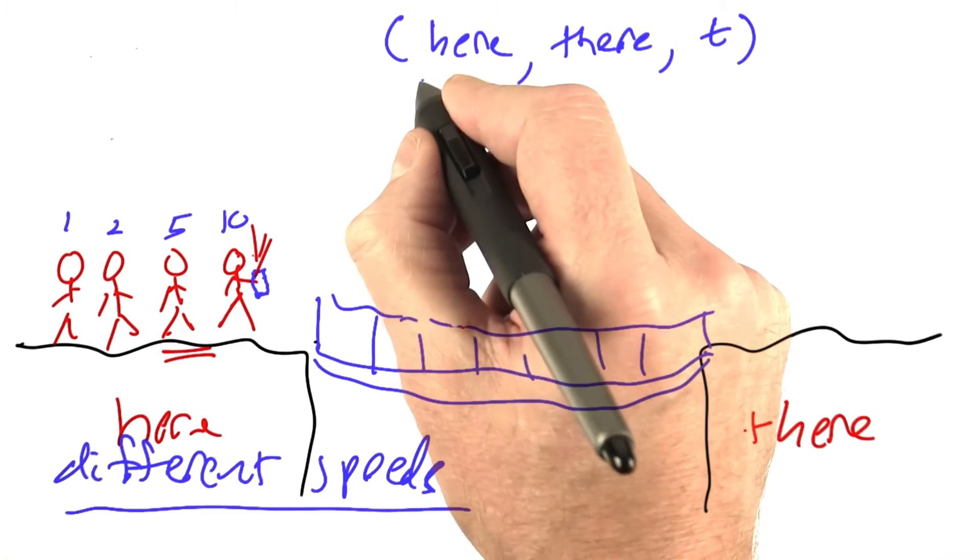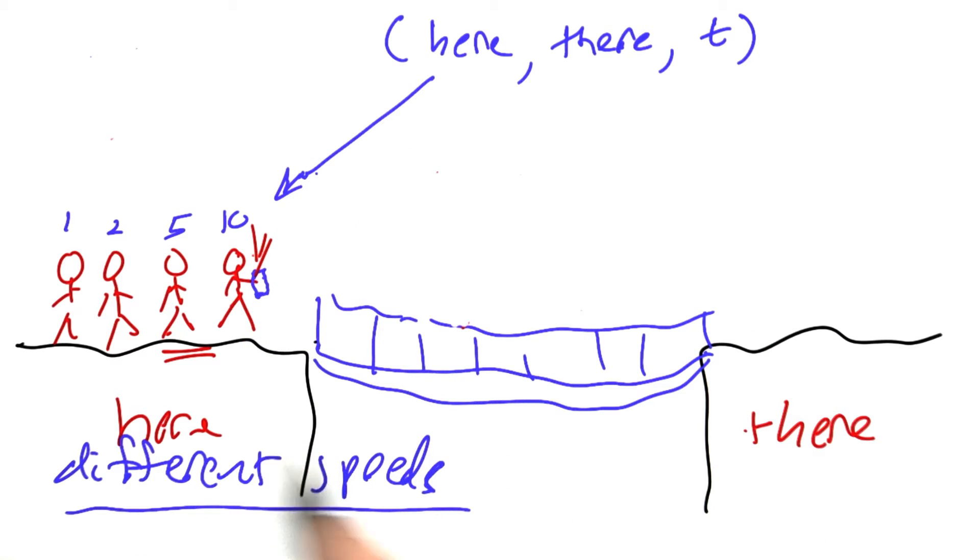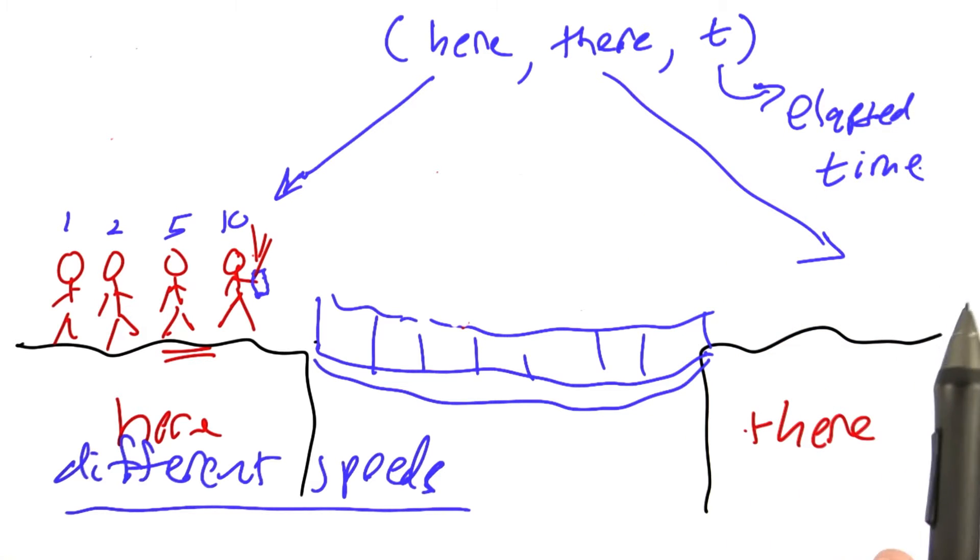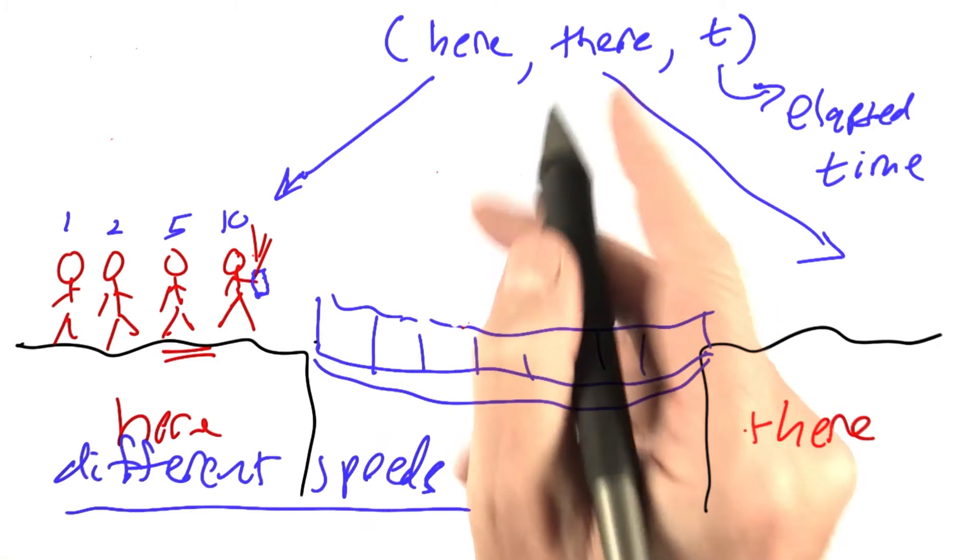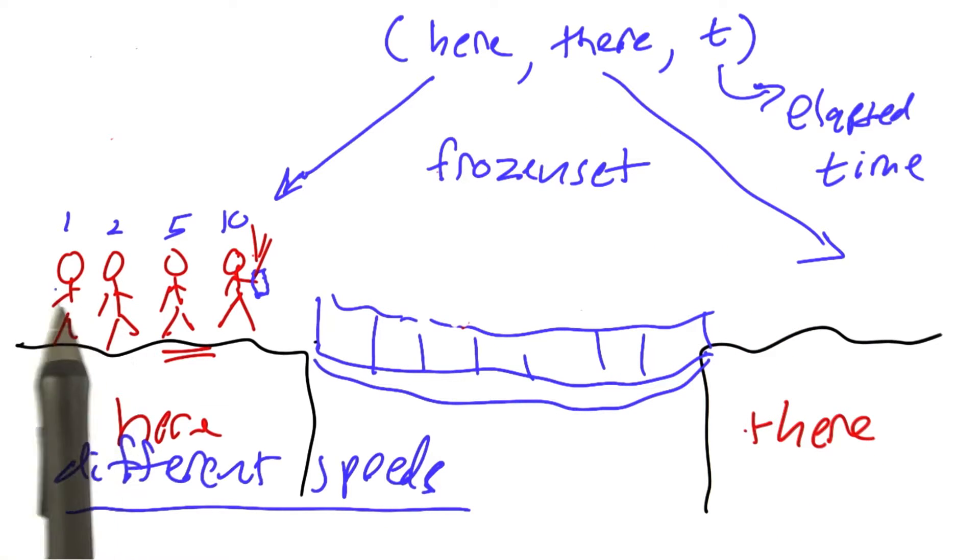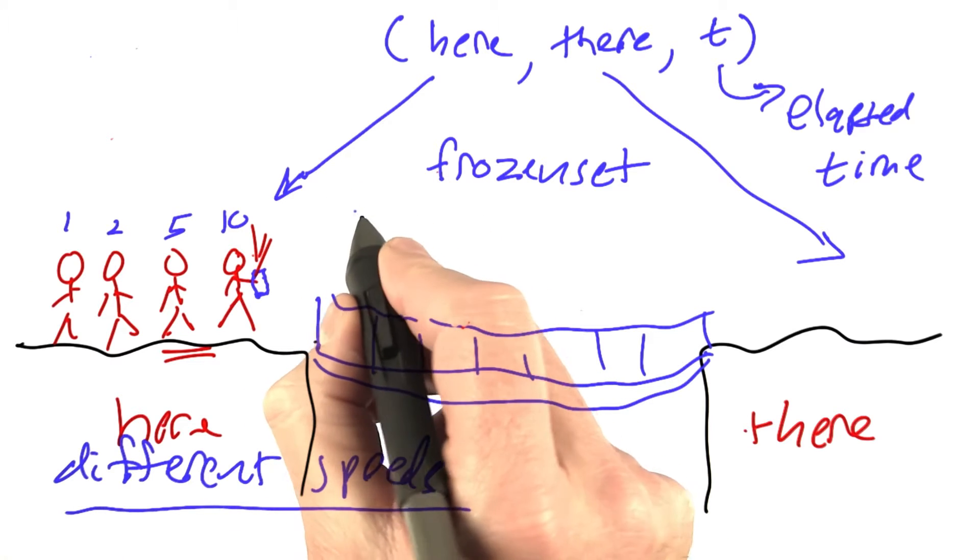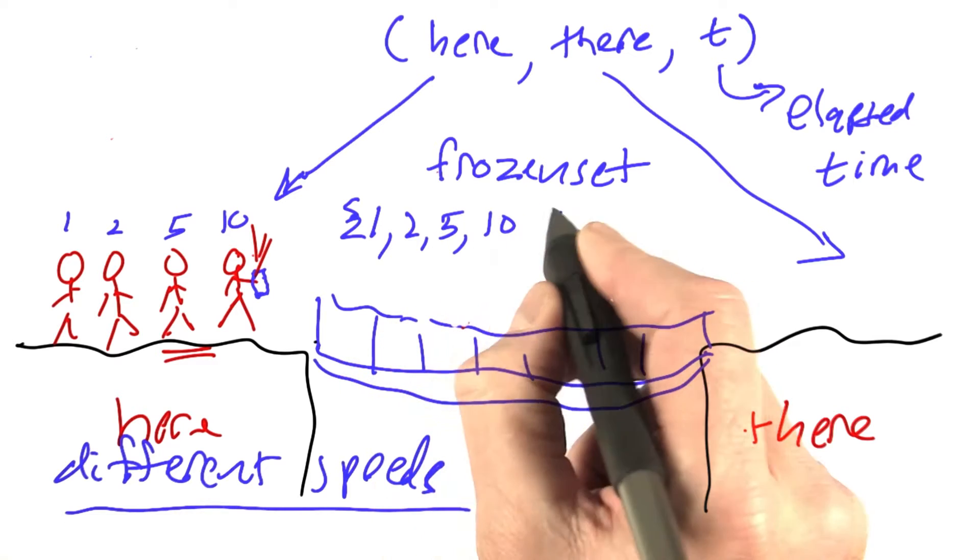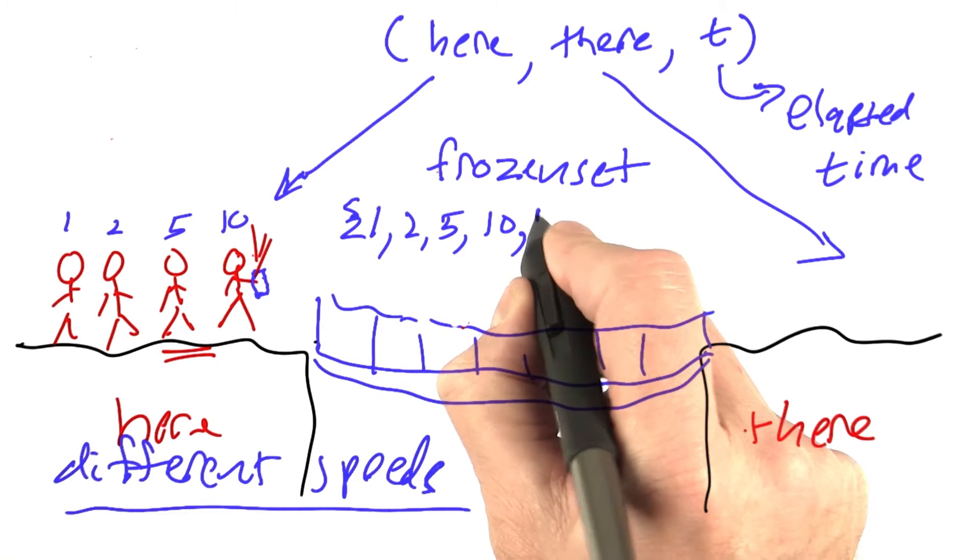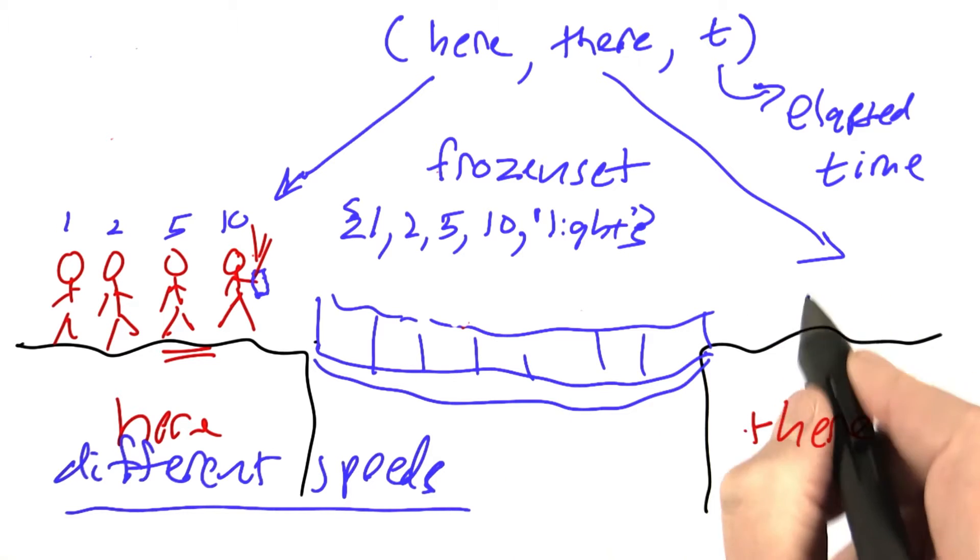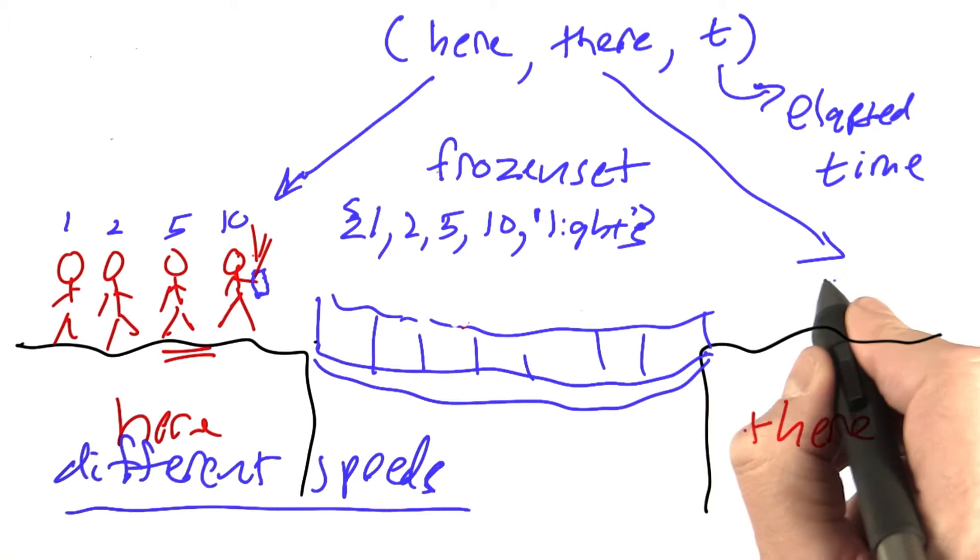Here represents everything that's on this side, there represents everything that's on that side, and t is the total elapsed time since the start. I'm going to represent here and there with frozen sets because those are hashable. This collection here would be the frozen set consisting of 1, 2, 5, 10, and I'm going to just use the string light to represent the flashlight, and there would be the empty frozen set.